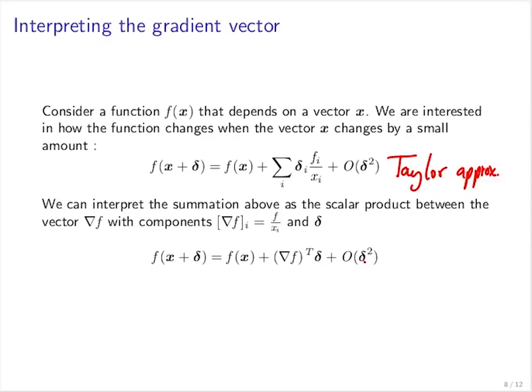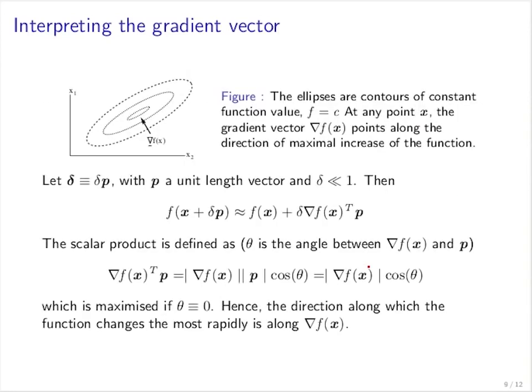And because delta is rather small, this term supposedly also rather small. So to understand a little better what this means, if we move away from our point x by a small amount, we say that delta is actually a unit length vector and it's scaled by a very small scalar δ. And then I can write the Taylor expansion like that.